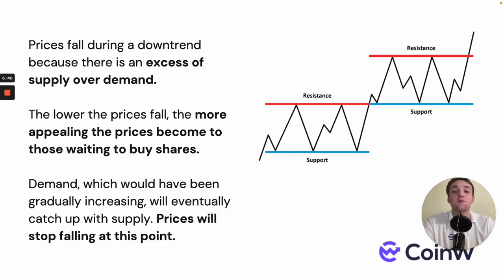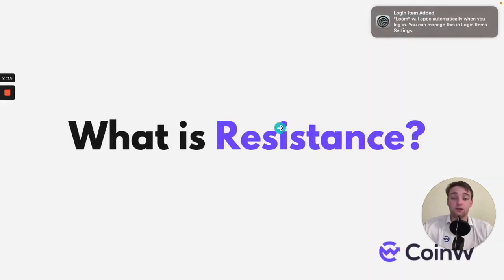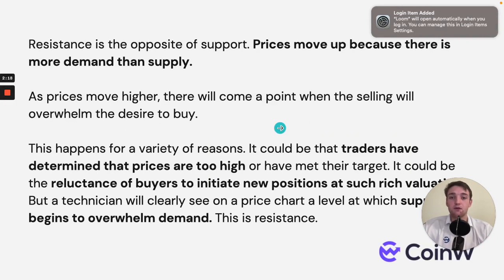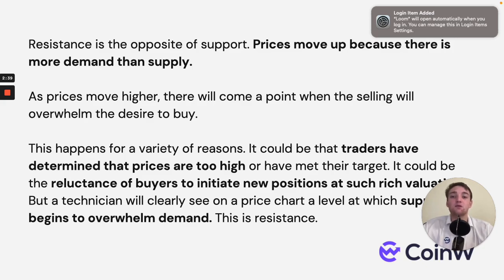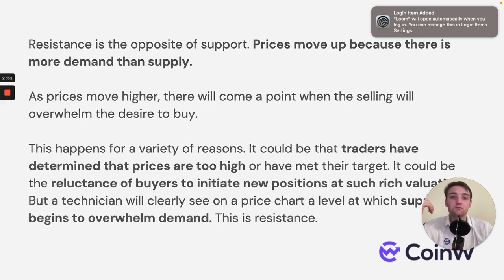Resistance is the opposite of support. Price moves up because there's more demand than supply, and as price moves higher there will come a point where selling overwhelms the desire to buy. This happens for a number of reasons — traders may have determined prices are too high, they've met their target, or if price goes up to a point where there was previously selling pressure, resistance will occur there due to sellers coming into the market.